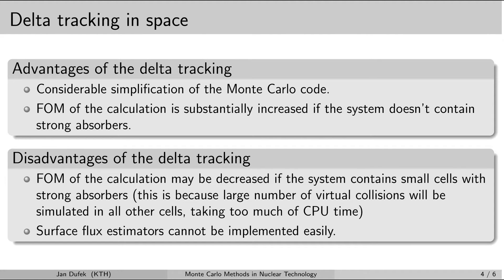Let me summarize the advantages and disadvantages of delta tracking. Perhaps the major advantage is the simplification of the Monte Carlo code, because finding the distance to the closest boundary is quite a difficult task for complex boundary shapes. Delta tracking can simplify the Monte Carlo code significantly. Another advantage is the possibility to improve the figure of merit — the efficiency of the calculation — in cases where the system does not contain very strong absorbers.